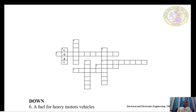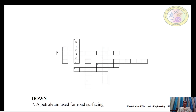The sixth down word: a fuel for heavy motor vehicles. We have already seen the fuel for motor vehicles is petrol; here, the fuel for heavy motor vehicles is diesel. The seventh down word: a petroleum product used for road surfacing. This word is frequently used when explaining petroleum products — it is nothing but bitumen.